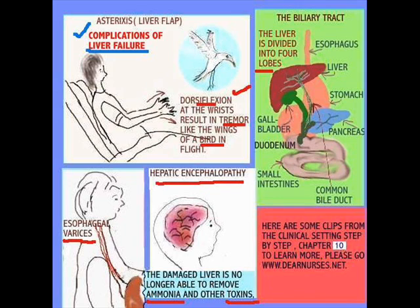On the right-hand side, I have included the biliary tract. You can see the liver, which is made up of four lobes. The liver is quite an important organ inside the body and is very involved in a number of different functions, which you'll find in Chapter 10 at dearnurses.net in the clinical settings, step-by-step.